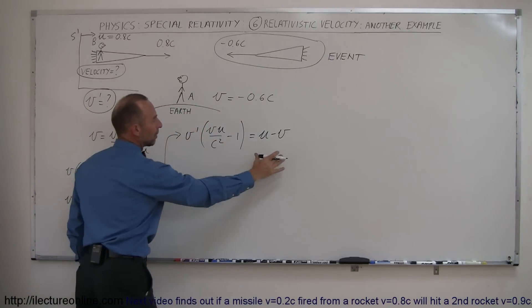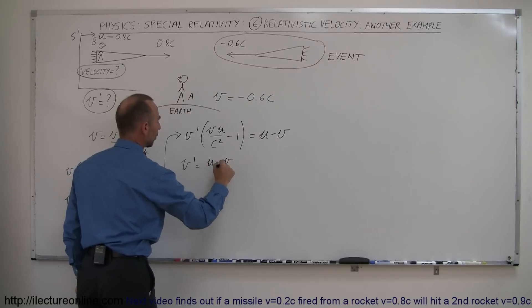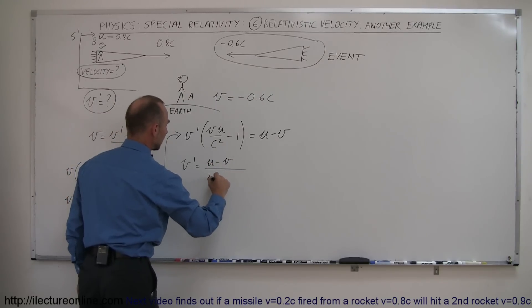Then of course we want to take this quantity and bring it over here. So we end up with V' is equal to U minus V over VU over C squared minus 1.